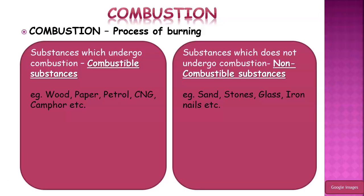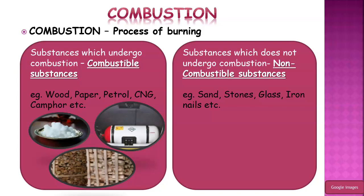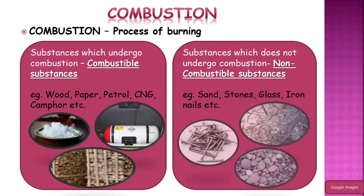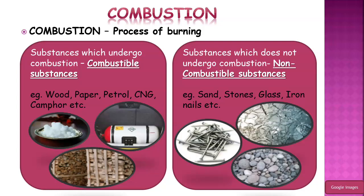What is the term combustion? It is nothing but the process of burning. The substances which undergo combustion, or the substances which can catch fire, are known as combustible substances — for example, wood, paper, petrol, CNG, and camphor. While the substances which do not undergo combustion, or cannot catch fire, are known as non-combustible substances — for example, sand, stones, glass, and iron nails.